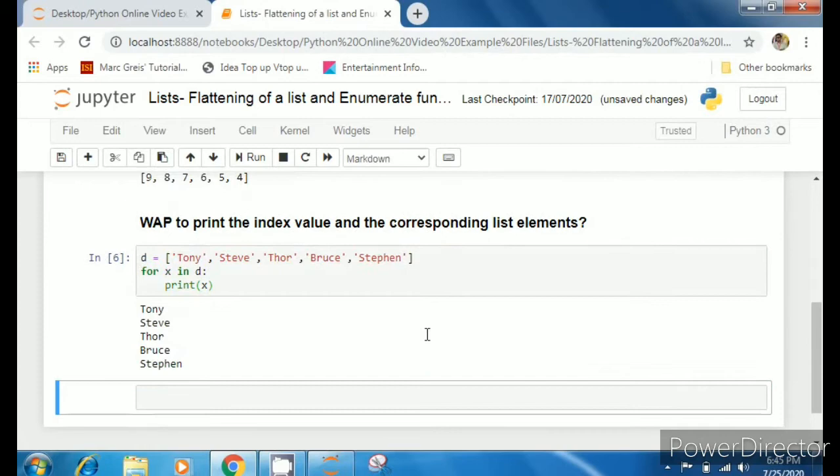If x is in d, print x. So if Tony is in d, print Tony, Steve. I've got the list elements. Now how to get the index value? Index is numeric position, numeric digit. It is 0, it is 1, 2, 3, 4.